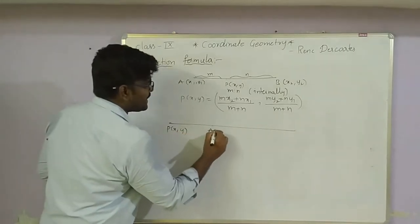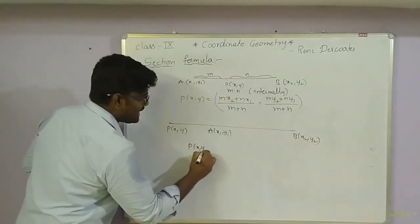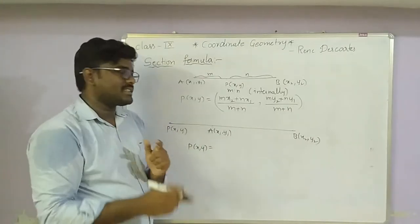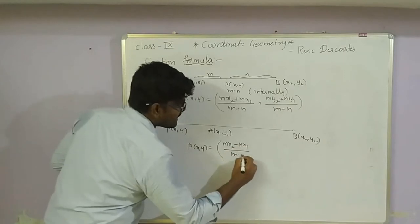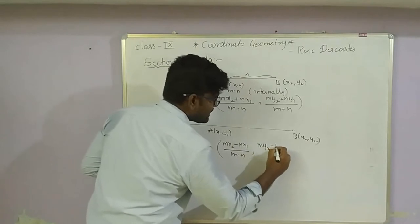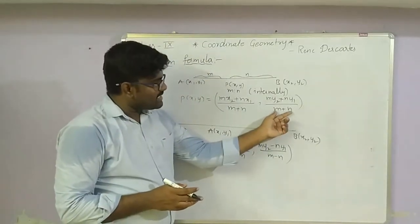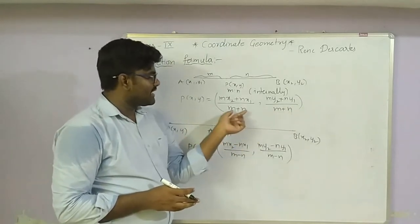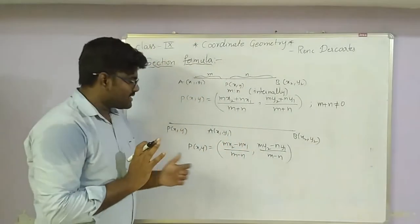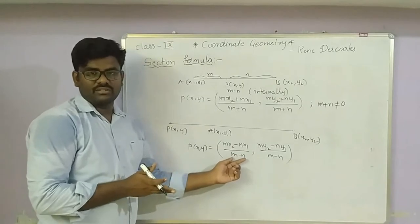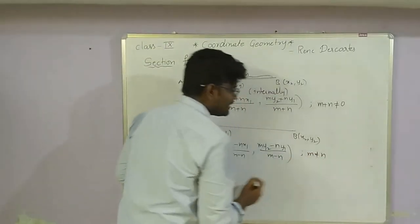For external division, point P (x, y) divides AB externally with A (x1, y1) and B (x2, y2). We substitute m:(−n) into the internal formula, giving: x = (m·x2 − n·x1) / (m − n), y = (m·y2 − n·y1) / (m − n). Conditions: m + n ≠ 0 for internal, and m − n ≠ 0 (i.e., m ≠ n) for external.